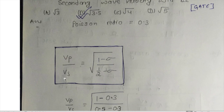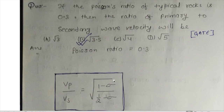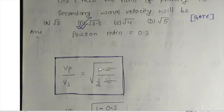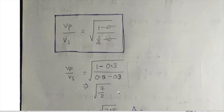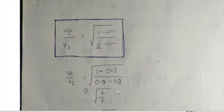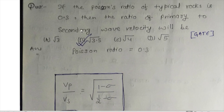Vp by Vs is equal to the square root of (1 minus sigma) divided by (1/2 minus sigma). We just put the Poisson's ratio value of 0.3 for sigma and we get the answer. The right answer is the square root of 3.5, that is option B.